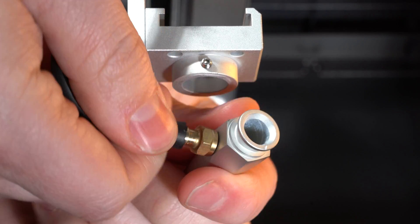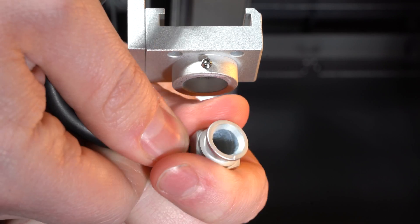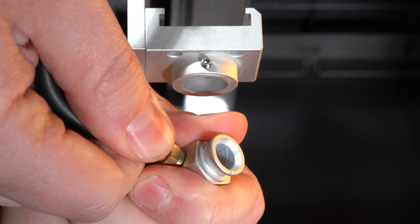Now very carefully remove the air line from the nozzle. This could be kind of stuck so just take your time and be gentle.